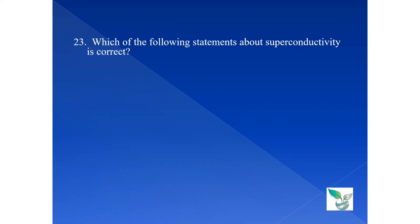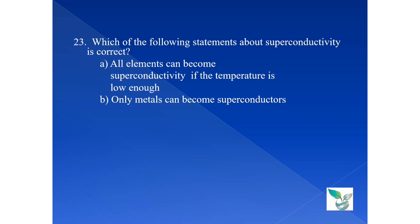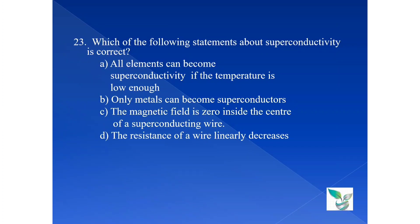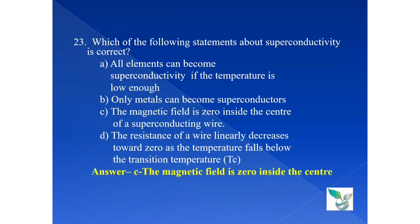Moving on to the next question, question number 23. Which of the following statements about superconductivity is correct? Option A, all elements can become superconducting if the temperature is low enough. Option B, only metals can become superconductors. Option C, the magnetic field is zero inside the center of a superconducting wire. Option D, the resistance of the wire linearly decreases towards zero as the temperature falls below the transition temperature. The answer is option C. The magnetic field B0 inside the center of a superconducting wire is the true statement about superconducting among these options.